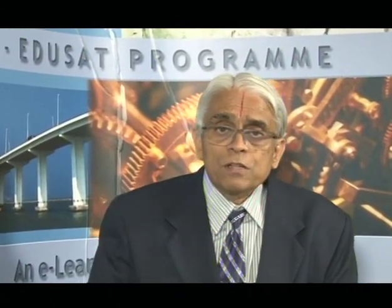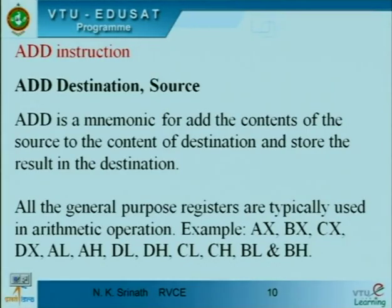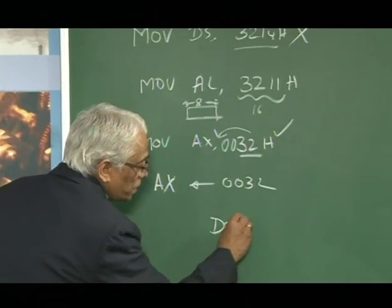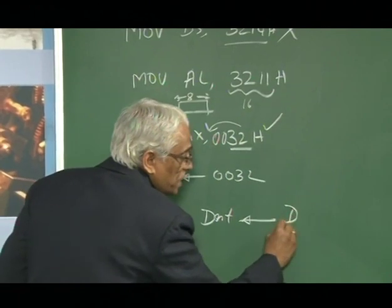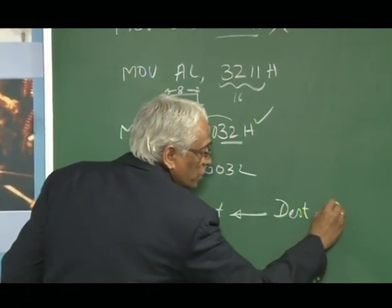Once you understand one instruction, the remaining instructions become convenient as we proceed through the instruction set. Now let us look at the ADD instruction. ADD has two operands — destination and source. ADD is a mnemonic to add the contents of the source to the contents of the destination and store the result in the destination. That means: destination = destination + source.